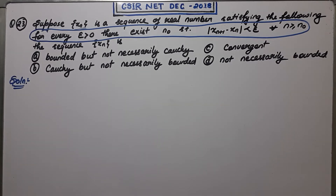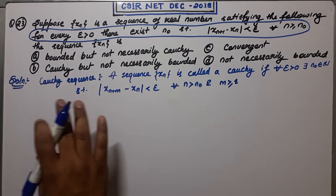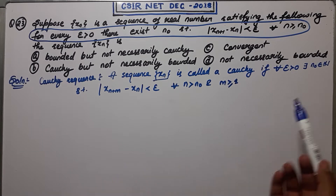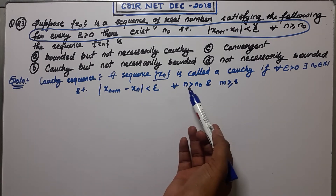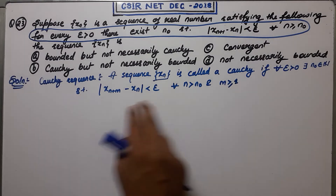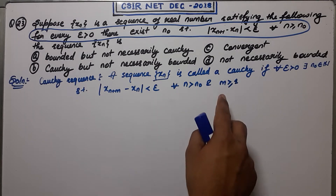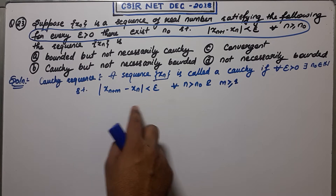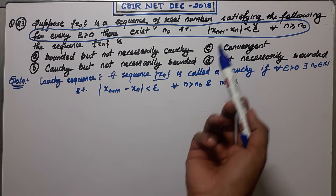First, I'll define what a Cauchy sequence is. A sequence x_n is called Cauchy if for every epsilon greater than 0, there exists a natural number n naught such that |x_{n+m} - x_n| < epsilon for all n greater than n naught and for all m greater than 1. Now, if x_n is a Cauchy sequence and we choose m = 1, we get |x_{n+1} - x_n| < epsilon, which is exactly the condition given in the question. So Cauchy implies this statement.